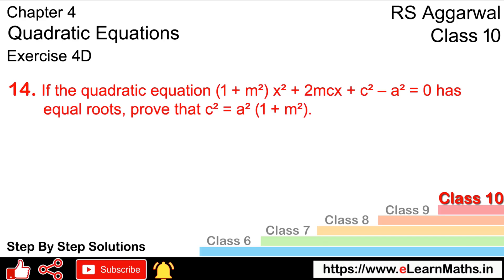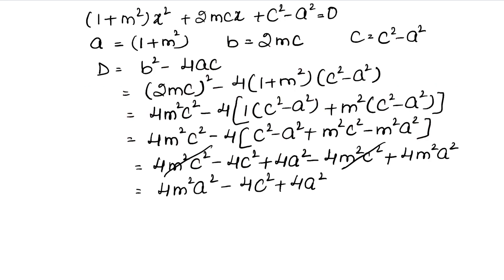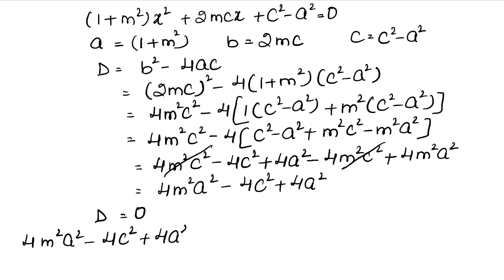Now, what do we have to prove for equal roots? This value is c² = a²(1 + m²). Equal roots ke liye D = 0 hota hai. So D = 4m²a² - 4c² + 4a² = 0.